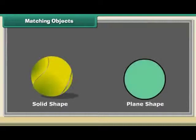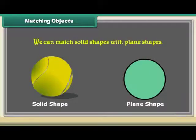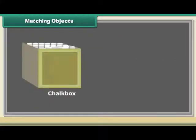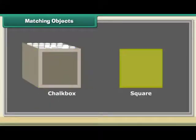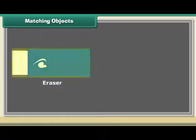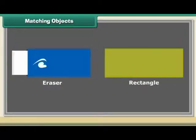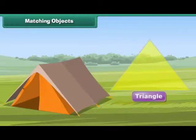Matching objects. We can match solid shapes with plain shapes. We can match a chalk box with a square. We can match an eraser with a rectangle. We can match a tent with a triangle. We can match a ball with a circle.